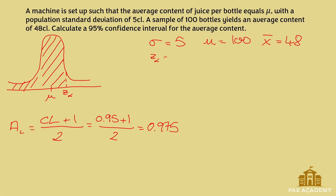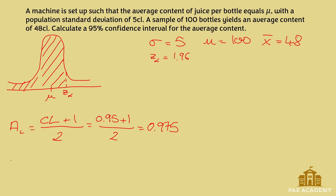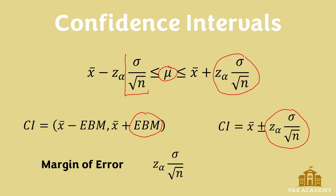We now know that the z-value is 1.96. One last thing we need before applying the formulas is to find the sample standard deviation, denoted sigma x-bar. The sample standard deviation equals the population standard deviation over the square root of the sample size: 5 over the square root of 100, which gives us 0.5.